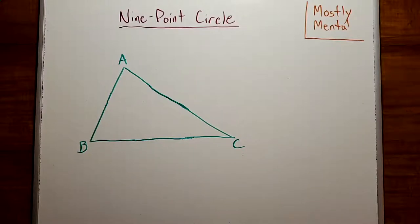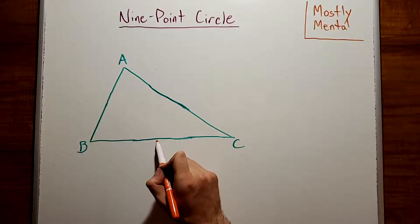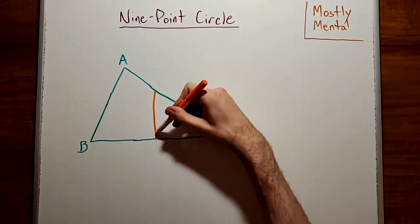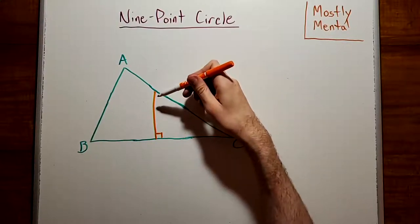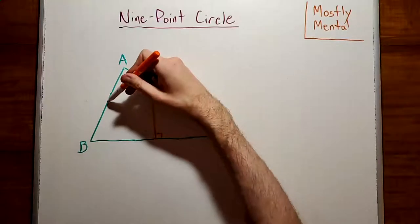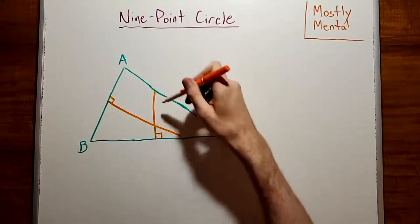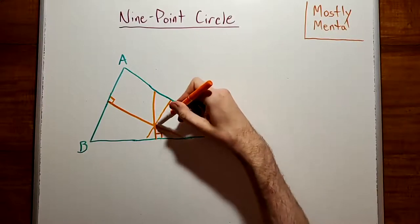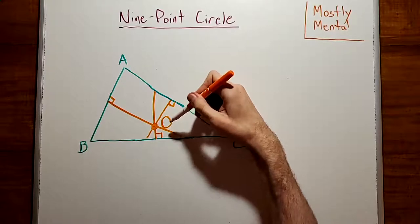Next, we have the circumcenter. Again, we'll start with the midpoint of each side, but instead of connecting it to the opposite vertex, we'll draw the perpendicular. This line is known as a perpendicular bisector. If we draw in all three, we see that once again the three lines all meet at a point, known as the circumcenter, O.